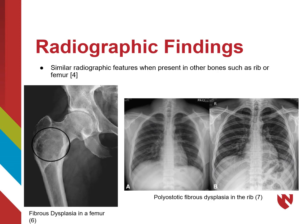As discussed earlier, fibrous dysplasia can appear in other bones besides the craniofacial bones, such as the ribs or femur. Even though we will not view these radiographs as dentists, it may be helpful to see that fibrous dysplasia has a similar radiographic appearance in other locations in the body.